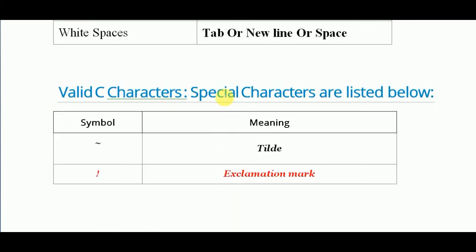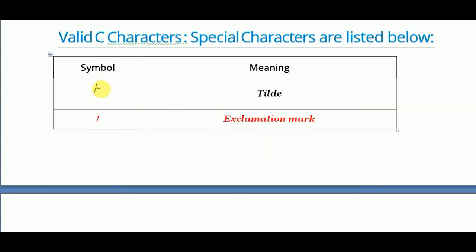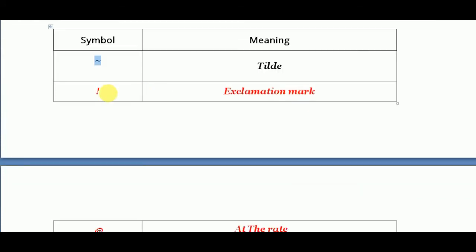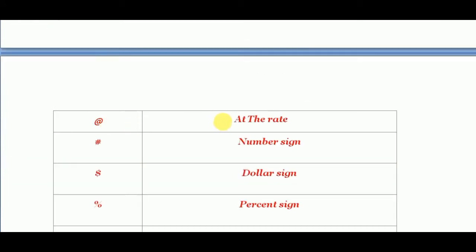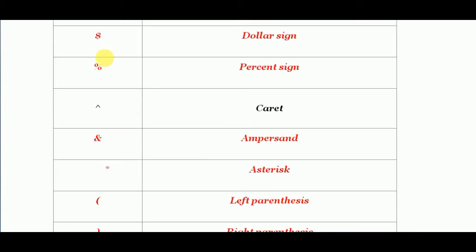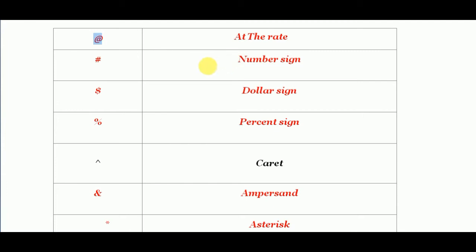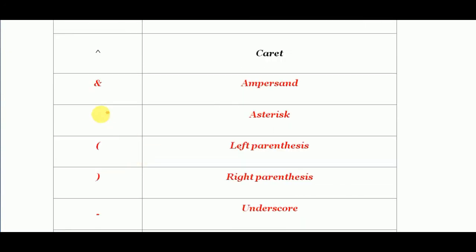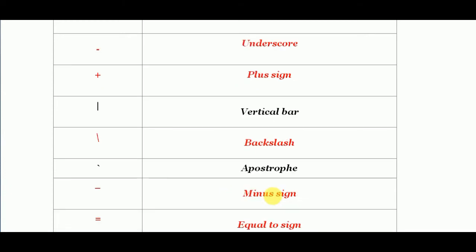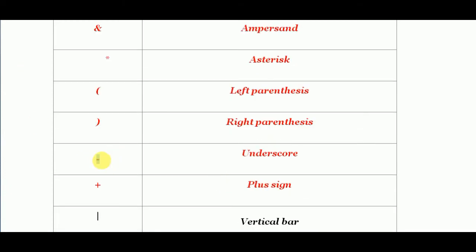Now let us see all the special characters used in C. This symbol is called tilde. Next this is called exclamation mark. Next comes the at-sign. This symbol is called the at-sign. Next this is hash or number sign. Next comes dollar sign. Then comes percent sign or percentage. Then comes caret. Then this is called ampersand. Then this star is called asterisk. Then this bracket is called left parenthesis. The closing of this bracket is called right parenthesis. This one is called underscore.